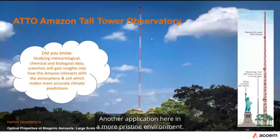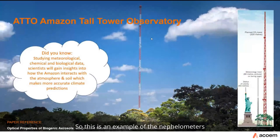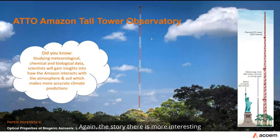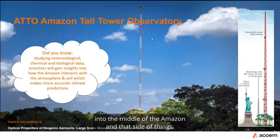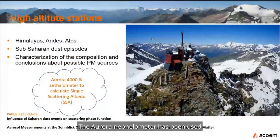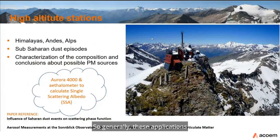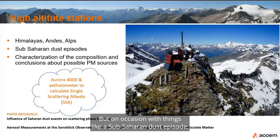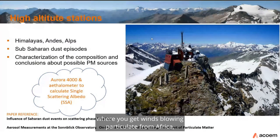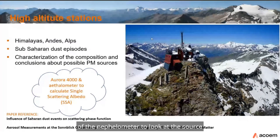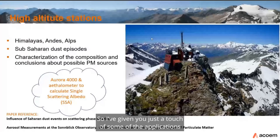In more pristine environments, nephilometers are used to sample from various elevations on the Amazon Tall Tower Observatory. The Aurora nephilometer has also been used at high-altitude stations in the Himalayas, the Andes, and the Alps — generally above the planetary boundary layer. On occasion, such as a sub-Saharan dust episode with winds blowing particulate from Africa over the Alps, the three-wavelength capability of the nephilometer can clearly show the change in aerosol composition and source.